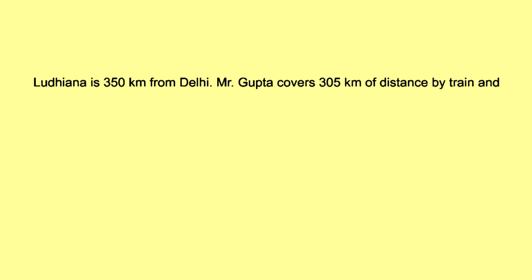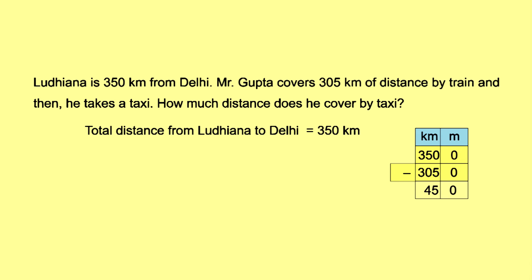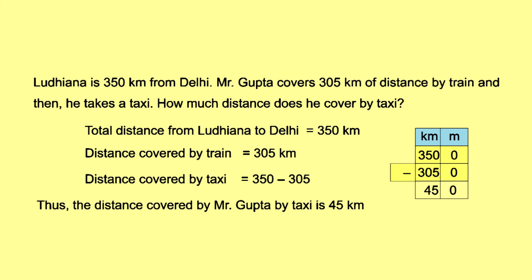Statement sum: Ludhiana is 350 kilometers from Delhi. Mr. Gupta covers 305 kilometers of distance by train and then takes a taxi. Total distance from Ludhiana to Delhi = 350 km. Distance covered by train = 305 km. Distance covered by taxi = 350 − 305 = 45 kilometers.